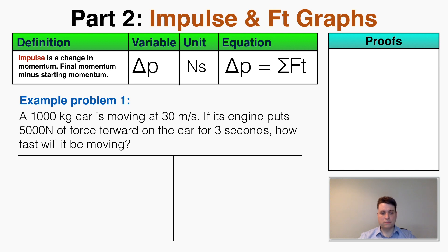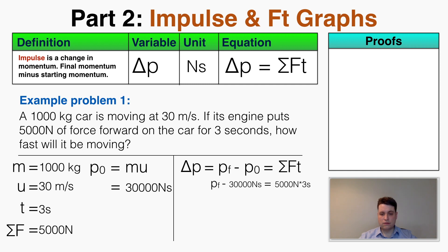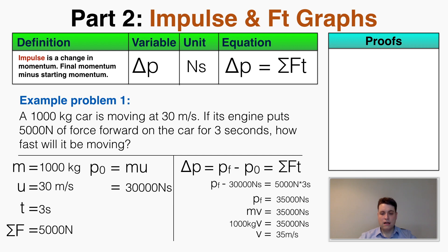Example one: a 1,000 kg car moving at 30 m/s has its engine apply 5,000 Newtons forward for 3 seconds. How fast will it be moving? The initial momentum is mass times velocity, which is 30,000 Newton seconds. Using the impulse equation: final momentum minus 30,000 equals 5,000 Newtons times 3 seconds, giving a final momentum of 35,000 Newton seconds. Dividing by the mass of 1,000 kg gives a final velocity of 35 meters per second.